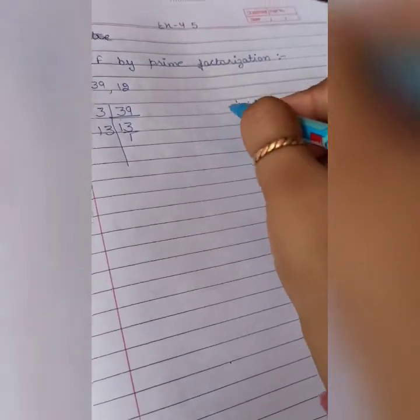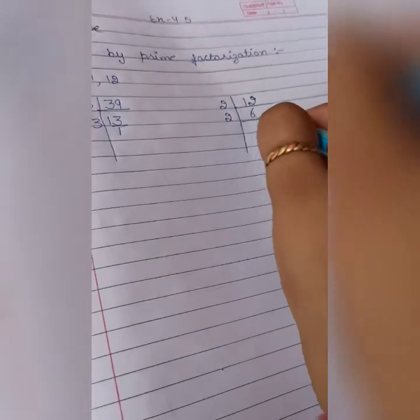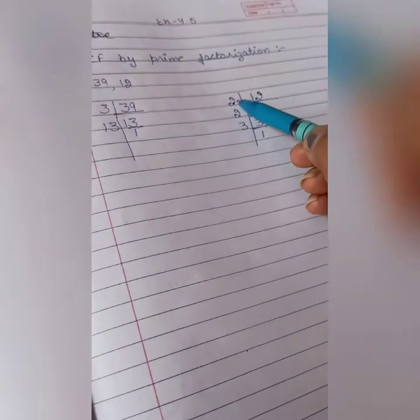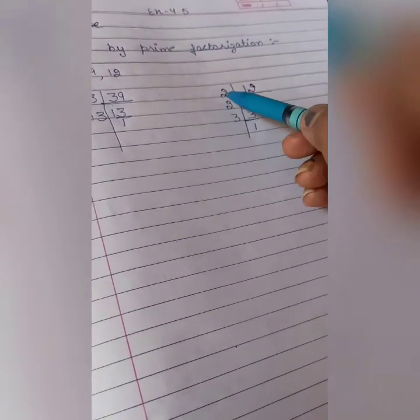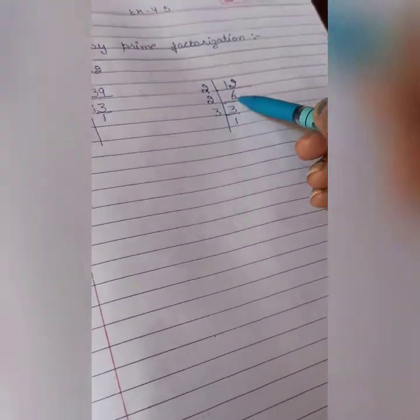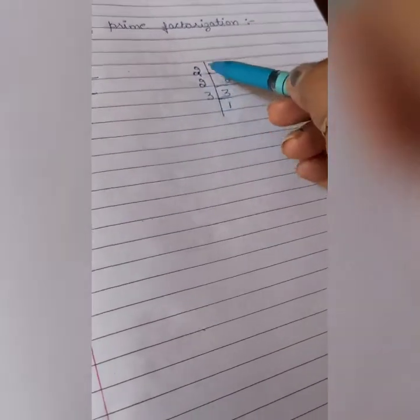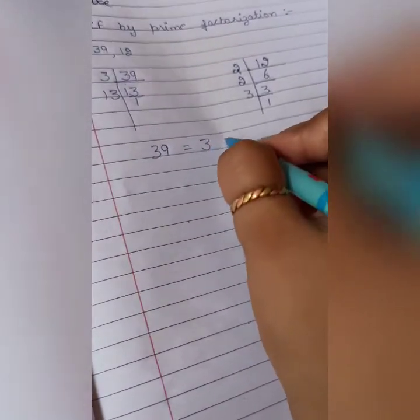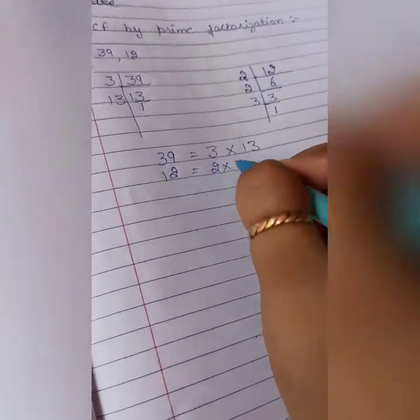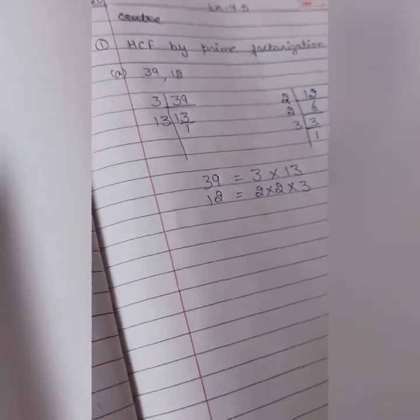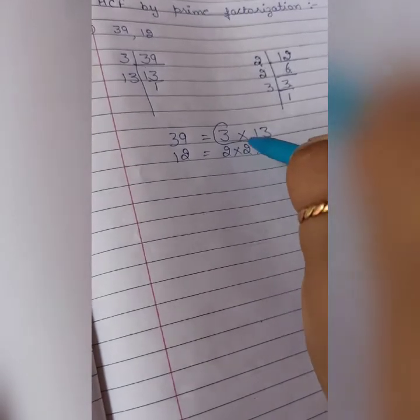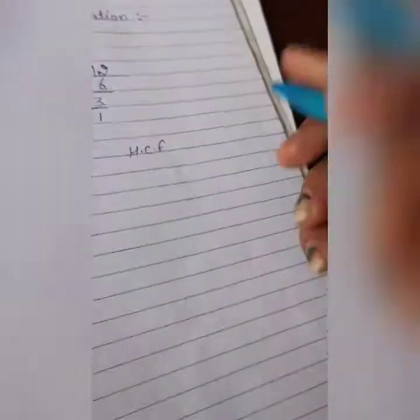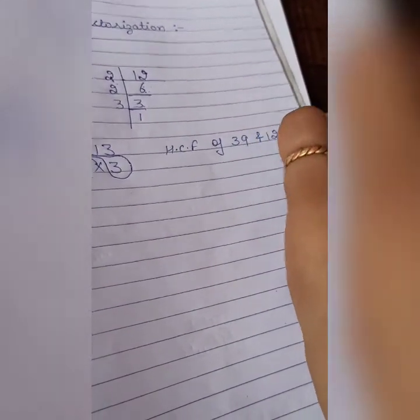Next is 12. Now 12, divide by 2. 2 sixes are 12, 2 threes are 6, 3 ones are 3. Here you will write the number. This side you will write the number by which you will divide. 39 equals to 3 multiply 13. 12 equals to 2 multiply 2 multiply 3. HCF means highest common factor. C stands for common. So common is 3. So HCF of 39 and 12 is 3.